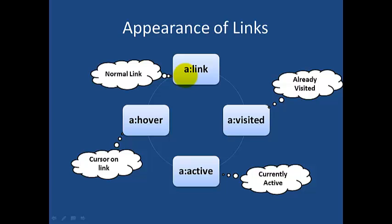Next, Appearance of Links. Now let's look at the anchor tag. We have to include the styles for the anchor tag. A link is a normal link. A hover is a pseudo-class — its main use is that when your cursor is on the link it is hover. Active is when you click on the link. You have to specify what type of link style to include.